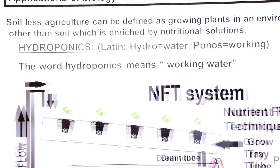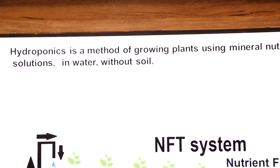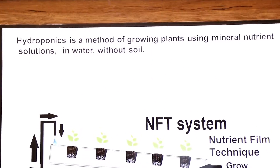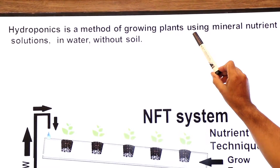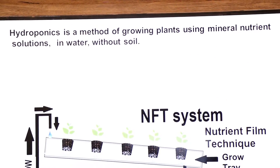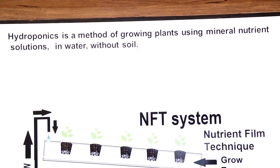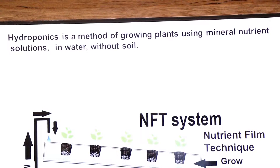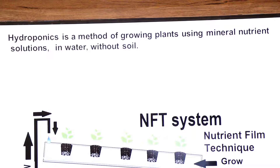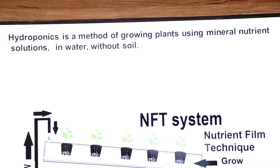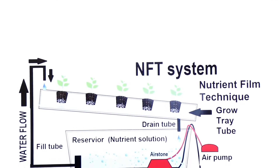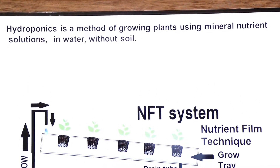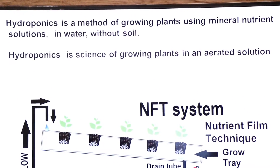Hydroponics is a method of growing plants using mineral nutrient solutions in water, without soil. Soil is not used in this method. It is called soilless culture.